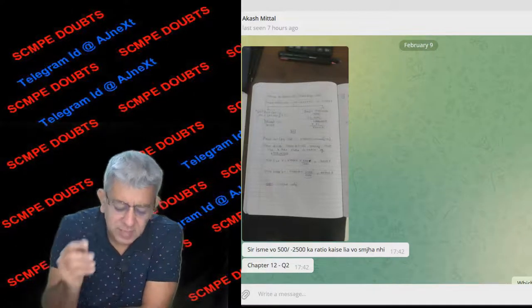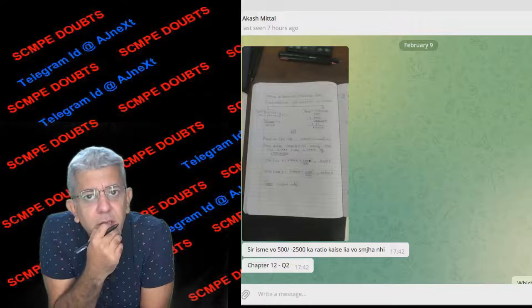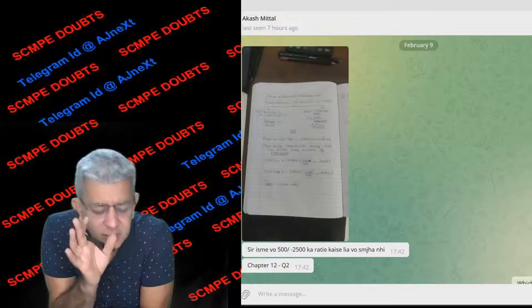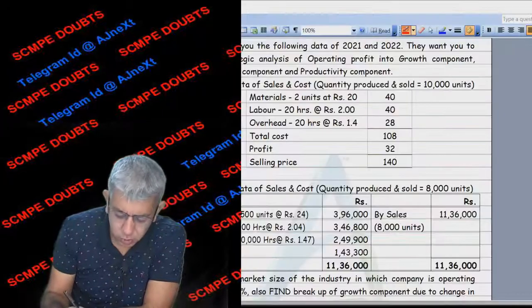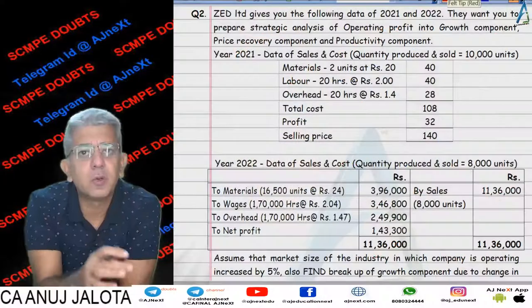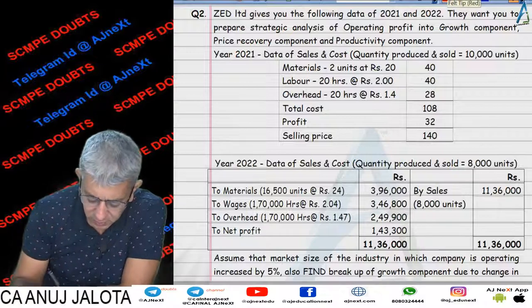Akash, you have asked a doubt on strategic analysis of income statement and this is quite easy. This doubt is all about - I'll show the question first. In the question, it's something like this, we have computed a profit volume variance.